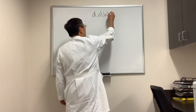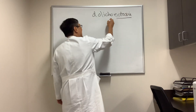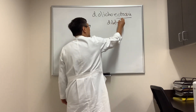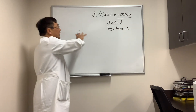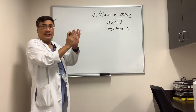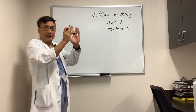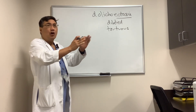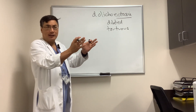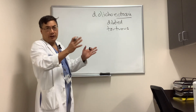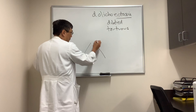We're going to talk about dolicoectasia, which is a fancy way of saying it's dilated and tortuous. Vessels can become dolicoectatic because of a pre-existing problem with the wall, like Marfan's or Ehlers-Danlos or any number of connective tissue disorders, or just from chronic long-standing hypertension, which is the usual cause. There are probably some genetic predispositions as well that we don't know about. And so normally blood vessels are like pipes.